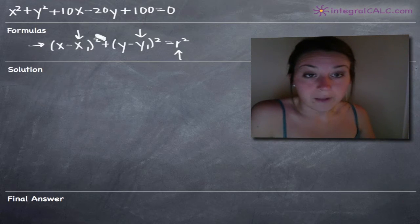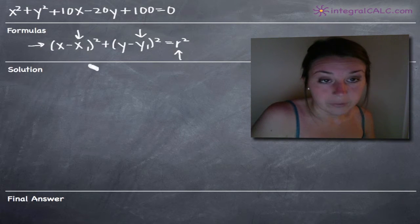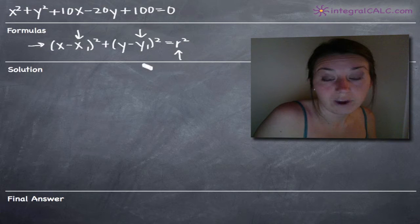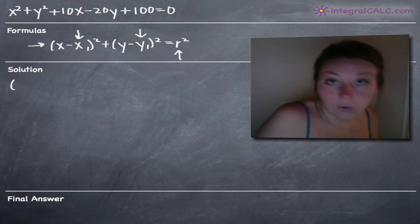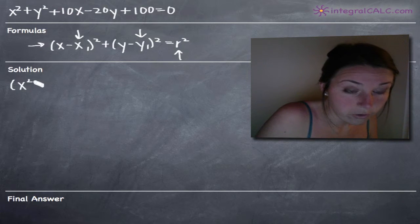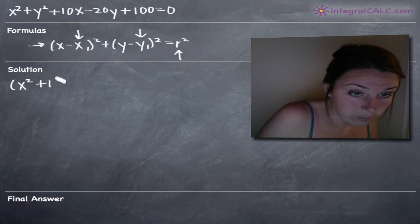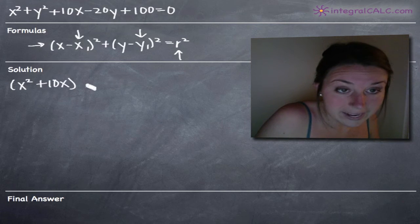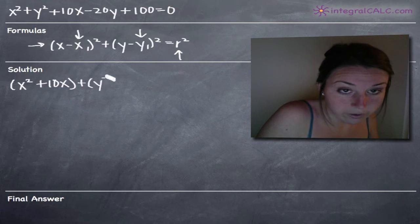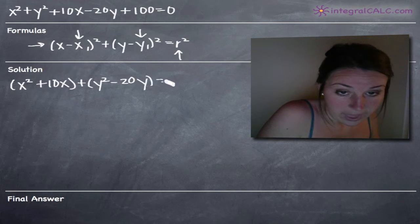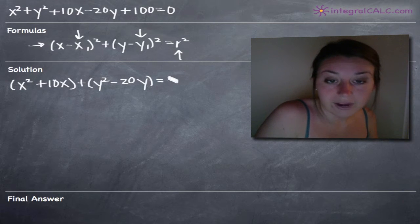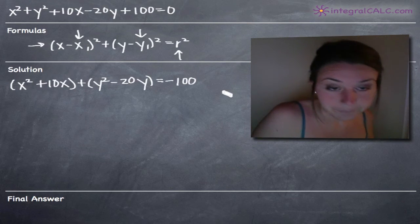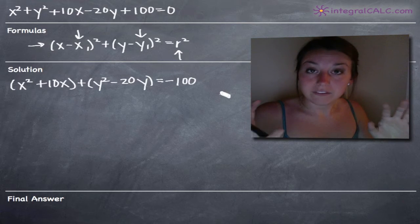If we know the center point and we know how far to move out from that center point, we can draw a perfect circle around the center. So in order to transform our equation into this form, we need to first group our x terms and our y terms together and move our constants to the right side. So we'll get x squared plus 10x and y squared minus 20y on the left, and move the 100 over to the right-hand side, giving us negative 100.